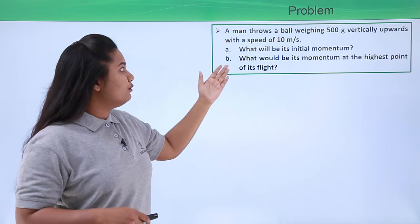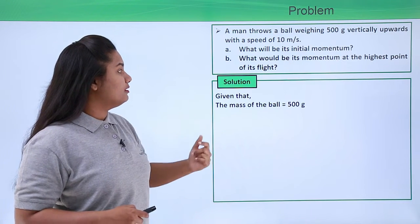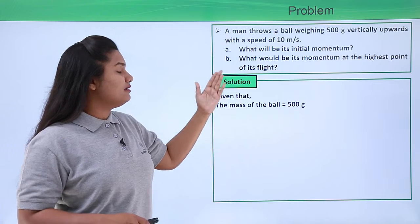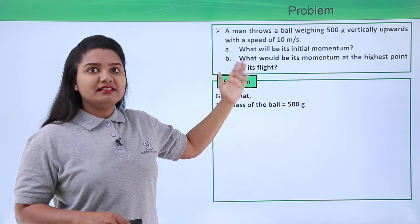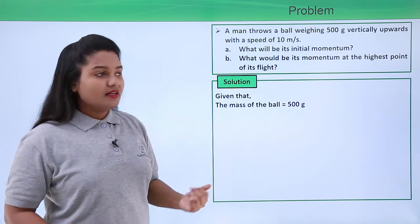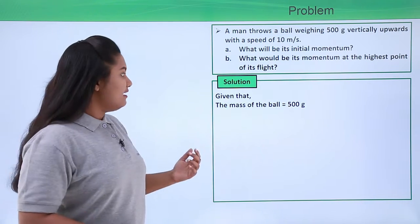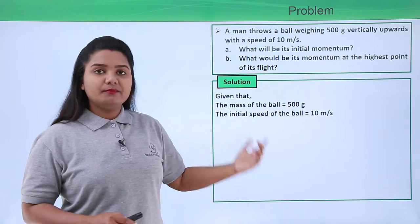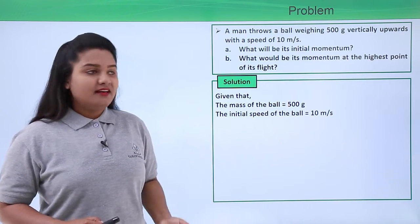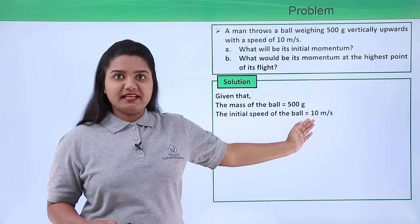So first thing that we will do in solving this problem is that we will list out whatever information is given to us by the question. So here the mass of the ball is given to be 500 grams and the initial speed with which the ball was thrown upwards is given to be 10 meters per second.